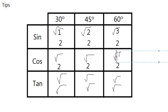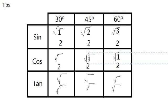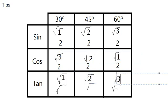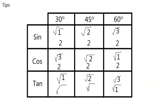Then you snake the count 1, 2, 3 through the table — filling in root 1, root 2, root 3 across sine, then continuing for cosine and tangent in the same pattern. Snake through with root 1 to root 3, repeat. That's all there is to it.